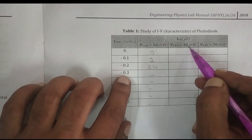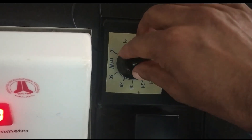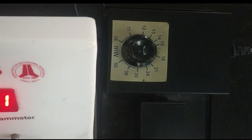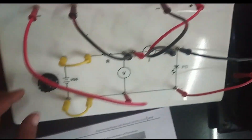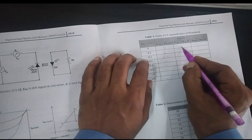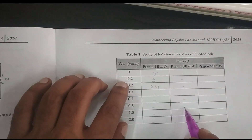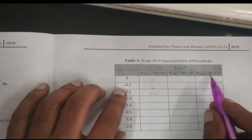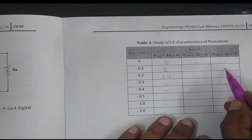Next, increase the power of the LED — for example, to 30 milliwatts — and keep it constant. Again, repeat the same procedure by applying different V_PD values and noting the corresponding I_PD values. Then again, repeat the same procedure by setting the LED power to 50 milliwatts.